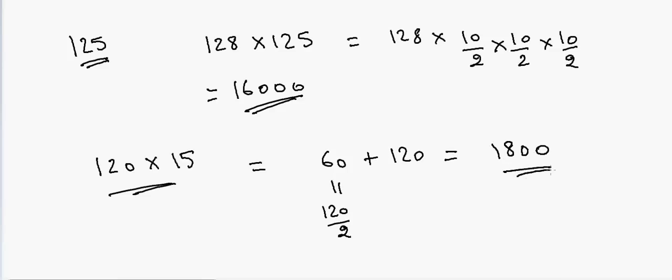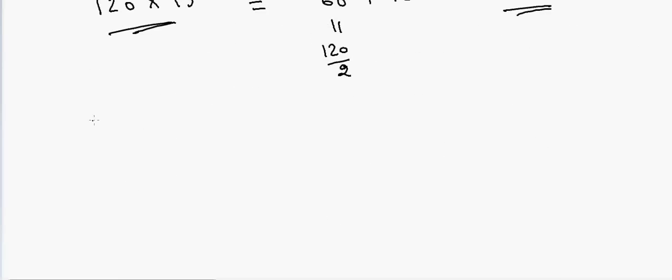Again, if I have 180 to multiply by 15, that will be equal to half of 180 is 90 plus 180. So 18 and 9, that's equal to 27, right? Two zeros in the end, so that's our answer.